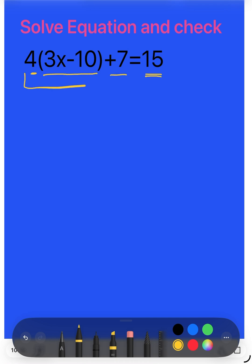What about the left side here? I simplify. Here we have bracket. I multiply 4 by the first term and I multiply 4 by the second term. 4 multiplied by 3x is 12x. 4 multiplied by negative 10, we have negative 40 plus 7 equals 15.